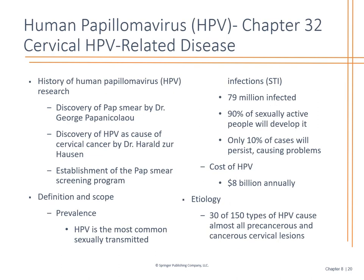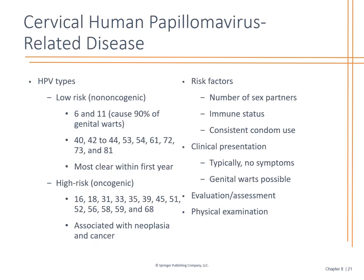We'll go to HPV — this is why we do pap smears and screening. Remember it is the most commonly sexually transmitted disease. We monitor for it with pap smears as our screening program. If we have abnormals, there's low risk and high risk. If you don't know where to go with an abnormal pap smear that is positive for HPV, talk to OB-GYN — that's what they do. If you can't get a hold of someone and need to refer out, refer out. Know what you don't know.